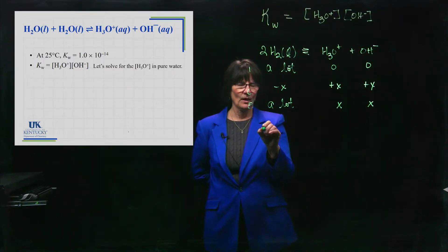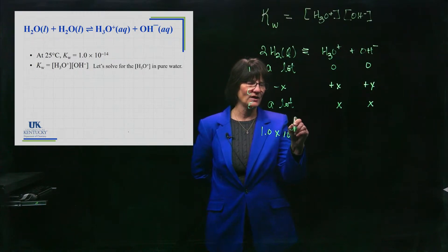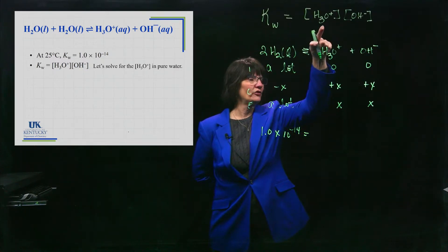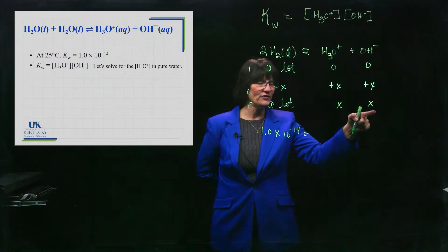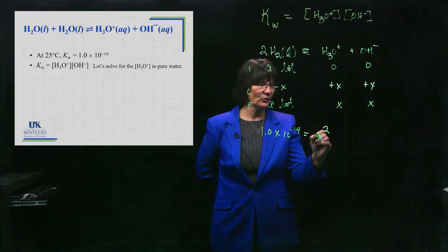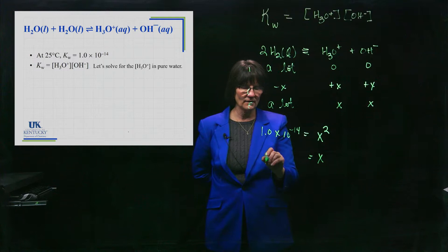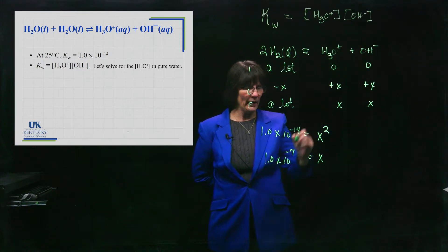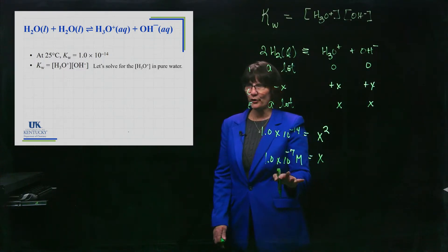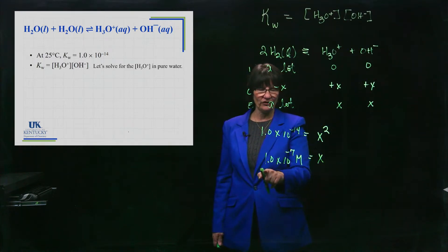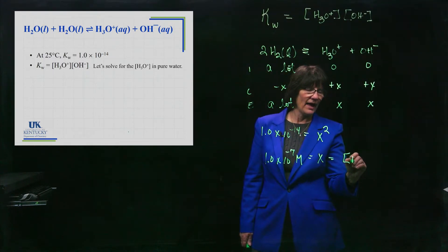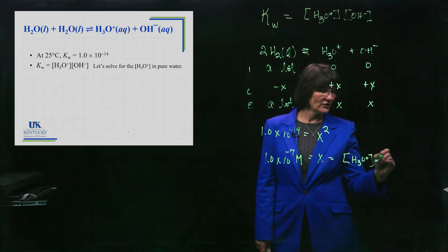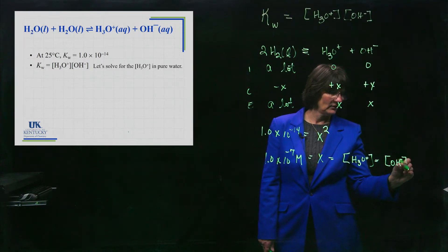Now let's take this expression. 1.0 times 10 to the minus 14 is the value of KW. I just told you that. And it's going to be equal this, which is X, times this. Are those both the same value? Yes. So it's X squared. If we take the square root of both sides, we end up with this. What's the unit? Well, this is all in molarity. So if you're pure water and you're at 25 degrees Celsius, the concentration of H3O plus is this value. Is that also the concentration of OH minus? Yes.